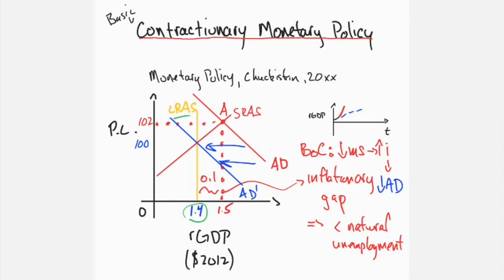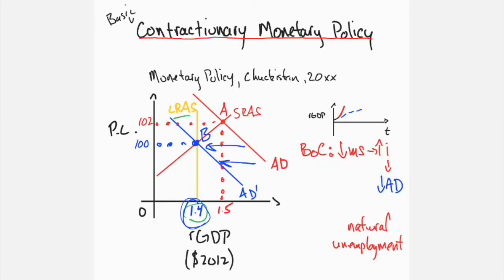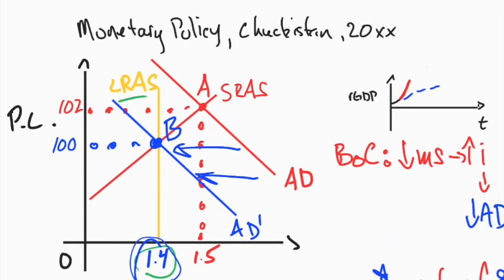This results in a new equilibrium at point B — output equal to 1.4 units of real GDP at a price level of 100 — placing the economy at its potential output with full employment. Achieving this outcome requires that the central bank commits to contractionary policy before the economy expands too much.